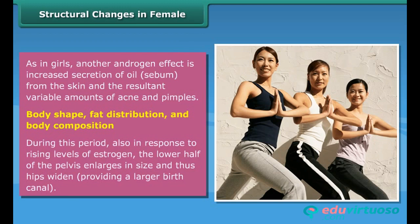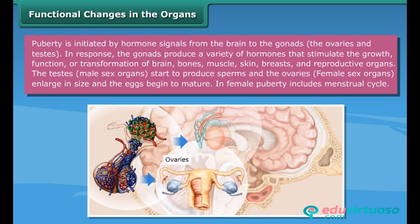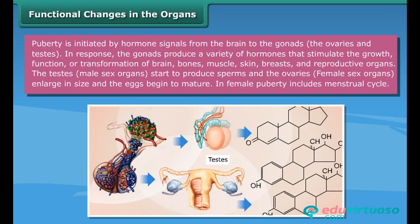Functional changes in the organs: puberty is initiated by hormone signals from the brain to the gonads — the ovaries and testes. In response, the gonads produce a variety of hormones that stimulate the growth, function, or transformation of the brain, bones, muscle, skin, breasts, and reproductive organs. The testes start to produce sperm, the ovaries enlarge in size, and eggs begin to mature.